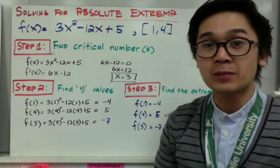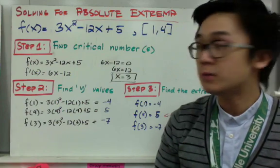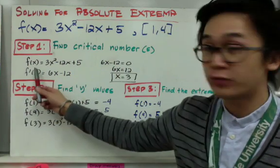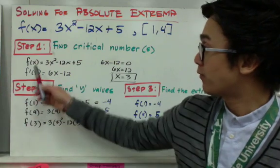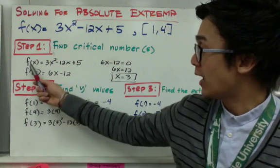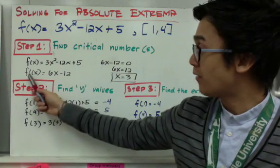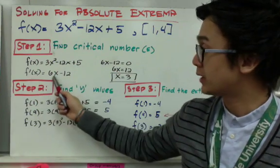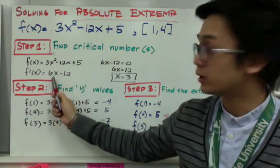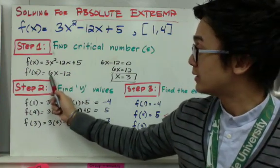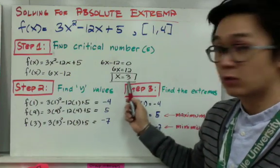The first step is to find the critical numbers. A critical number is found by solving for the first derivative and setting it to 0 to solve for x. Our function f of x is 3x squared minus 12x plus 5, so f prime of x is 6x minus 12. Setting 6x minus 12 equal to 0 and solving for x gives x equal to 3. So x equals 3 is the critical number.